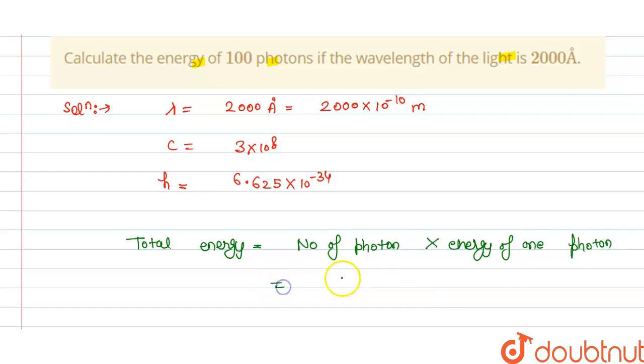So we have the number of photons is 100 and energy of 1 photon is, we have Planck constant H, C divided by lambda.